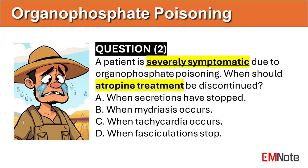Question number 2: A patient is brought to the emergency department after being exposed to an organophosphate. The patient is severely symptomatic and atropine is given. When should atropine treatment be discontinued? The correct answer is A. For severely symptomatic patients due to organophosphate poisoning, atropine treatment should be discontinued only when secretions have stopped.